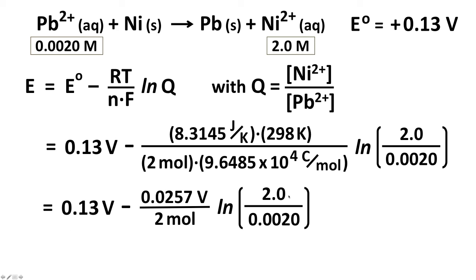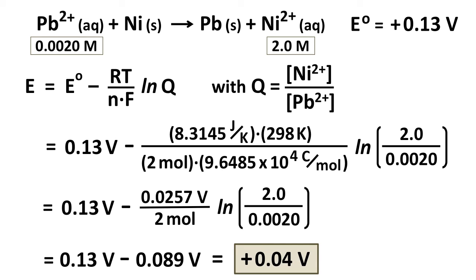So here we have this set up in the more condensed form of the Nernst equation, given that we're at 25 degrees Celsius. 0.13 volts minus 0.089 volts. All this stuff after the subtraction sign works out to be about 0.09 volts. So 0.13 volts minus 0.089 volts, rounded off properly, is +0.04 volts. This is still a positive cell potential, but it's quite a bit smaller than the 0.13 volts for the standard conditions one. So this is still a spontaneous process under those conditions, but it's quite a bit less spontaneous than at standard conditions.